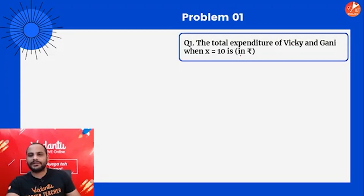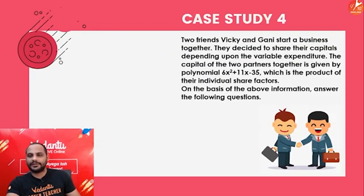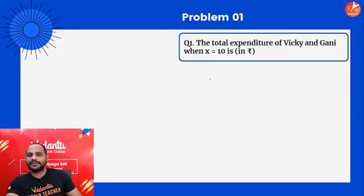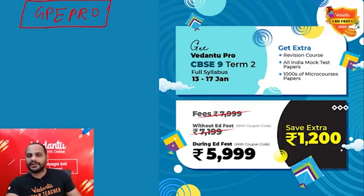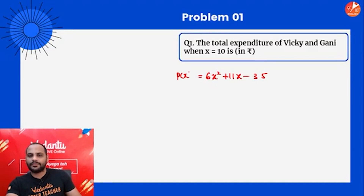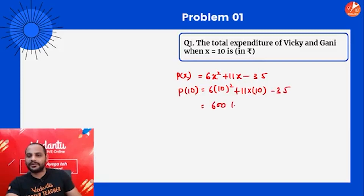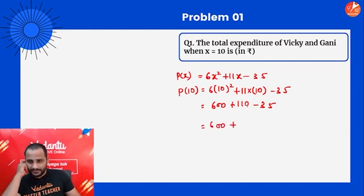First question: find the total expenditure of Vicky and Gunny when x = 10. Substitute x = 10 into 6x² + 11x - 35: 6(10²) + 11(10) - 35 = 600 + 110 - 35 = 675. So the total expenditure when x = 10 is 675.